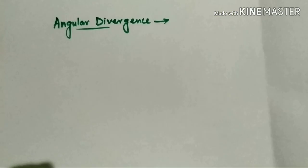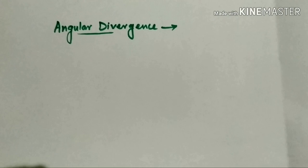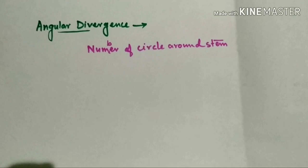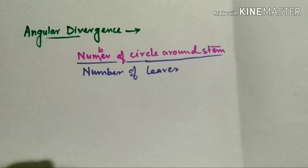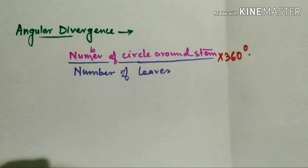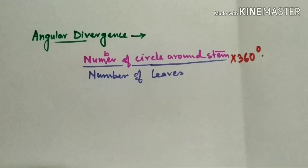Hi friends, welcome to Botany: The Language of Plants. Today's topic is Angular Divergence. Angular Divergence means the number of circles around the stem divided by the number of leaves, multiplied by 360 degrees. This is the formula to get Angular Divergence of a plant.